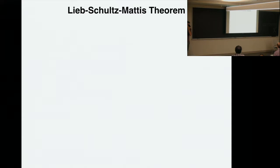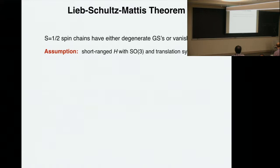The Lieb-Schultz-Mattis theorem is a classic result in quantum magnetism. The statement is that if you have a spin-1/2 chain, and the Hamiltonian is both translation invariant and preserves the SO(3) spin-rotation symmetry, then the ground state must be degenerate. It's either degeneracy from spontaneous symmetry breaking, or the gap vanishes. The assumption is that the Hamiltonian is short-range and preserves both symmetries.